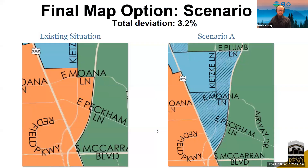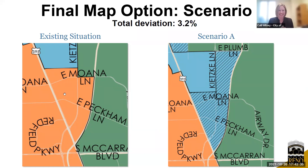One of the smaller changes took place over by Moana and Plumb Lane, where a lot of that area shifts from Ward 2 over to Ward 1, and a little bit of Ward 3 north of Milana also shifts to Ward 1.